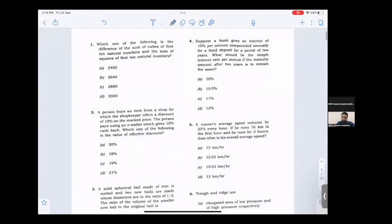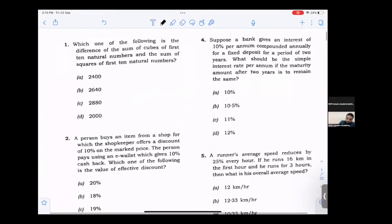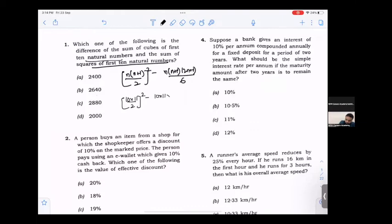What is the difference of the sum of the cubes of first 10 natural numbers minus sum of the squares of first 10 natural numbers? Cubes ka formula hota hai n into n plus 1 by 2 ka whole square. Squares ka formula hota hai n into n plus 1, 2n plus 1 divided by 6. Putting 10: 10 into 11 by 2 ka whole square minus 10 into 11 into 21 by 6. This becomes 55 square minus 55 into 7. Taking 55 common: 55 into 48 equals 2640.